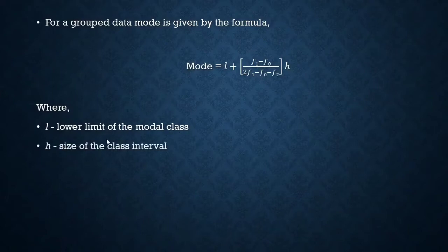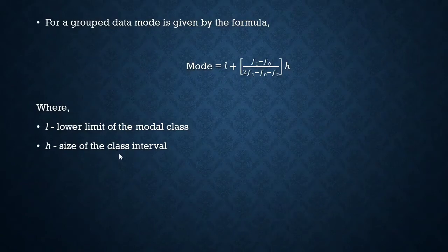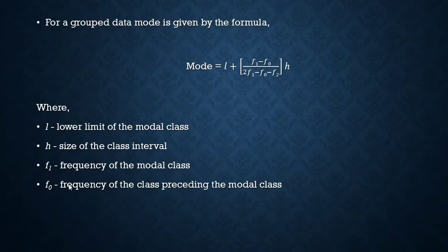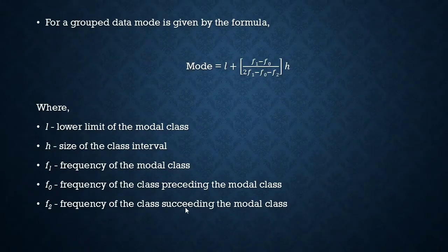h is the size of the class interval — so if our class is 10 to 20, its size is 20 minus 10, which is 10. f₁ is the frequency of the modal class, f₀ is the frequency of the class preceding the modal class, and f₂ is the frequency of the class succeeding the modal class.